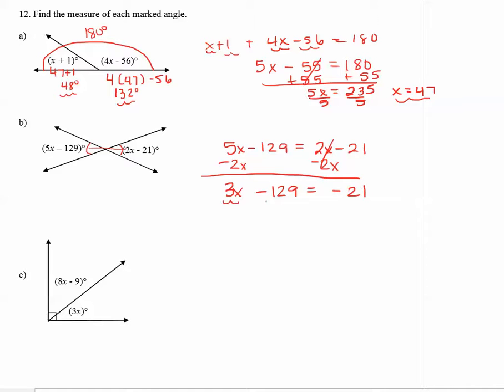Now we want to get 3x alone. So the minus 129 becomes plus 129 to both sides. And then we have 3x equals negative 21 plus 129. And that equals 108.